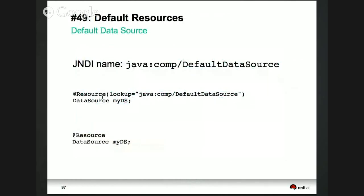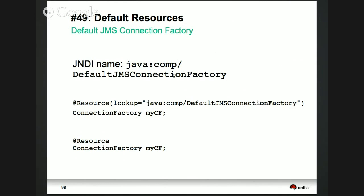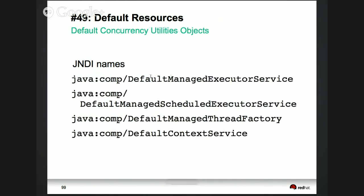In Java EE7, when you're doing web-based application development, you're building database-driven applications. The goal is to keep the bar low. Now there is a standard java:comp/DefaultDataSource — every time you run a Java EE7 application server, there is a default data source available to you, mapped to whatever the default application server database is. Similarly, there is a default JMS connection factory and all these default managed objects.